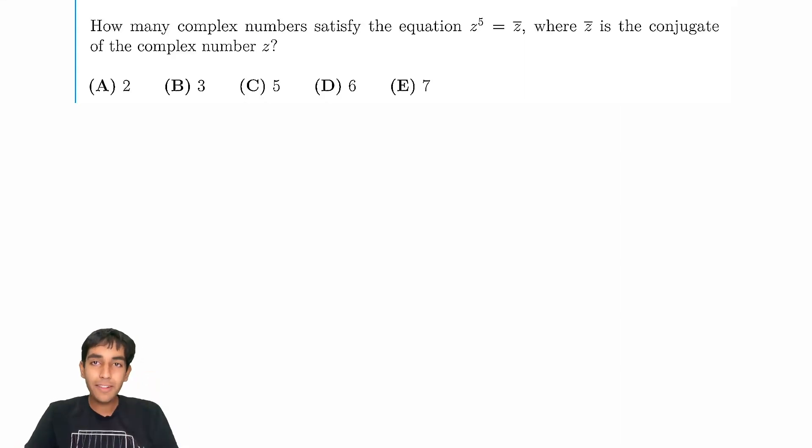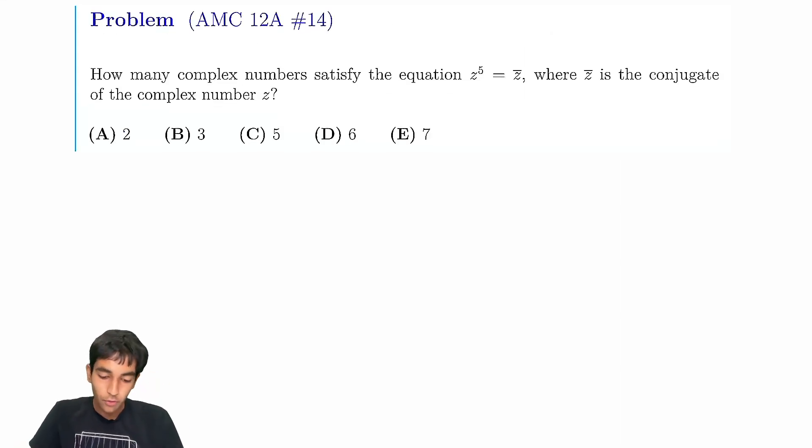Let's now solve this complex numbers problem from the AMC 12, which has a really slick solution. We've got: how many complex numbers satisfy z to the 5 equals the conjugate of z, where the conjugate of a number a plus bi is just a minus bi.